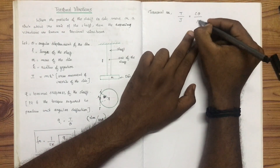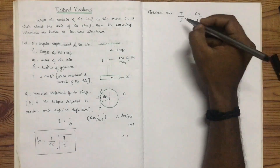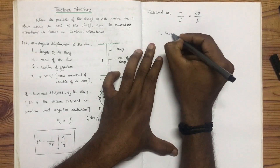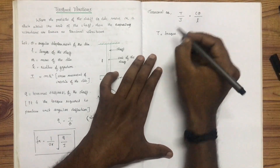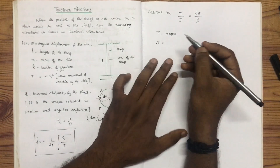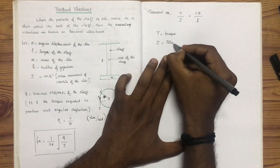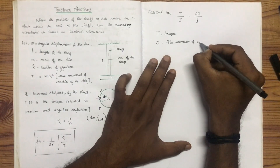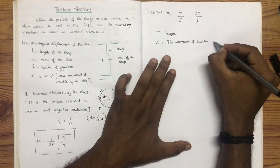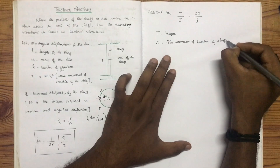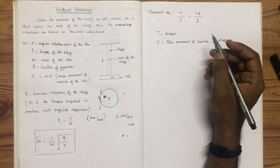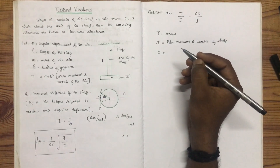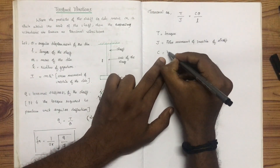Let's define the variables. C theta divided by J is the torsional equation, where T is the torque, J is the polar moment of inertia of the shaft cross-section, C is the modulus of rigidity — the shear modulus of the shaft material.